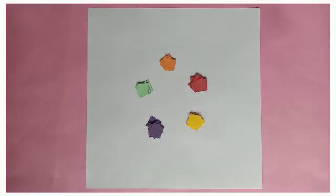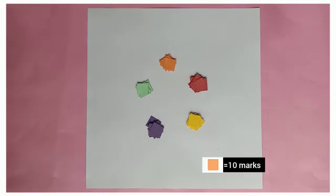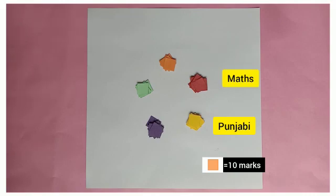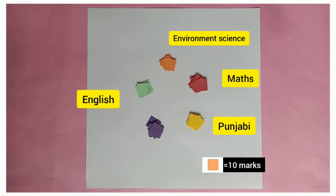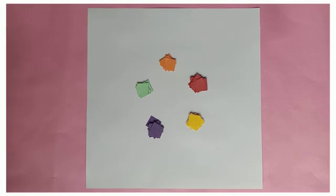Dear students, here I have different colors of paper pieces. These different color paper pieces represent marks scored by Gurpreet in different subjects. One piece represents 10 marks. Yellow colored pieces represent Punjabi subject, red colored pieces represent math subject, green colored pieces represent English subject, orange colored pieces represent environment science subject, and purple colored pieces represent Hindi subject.